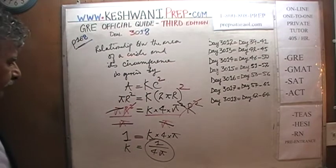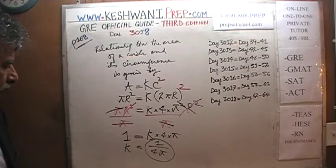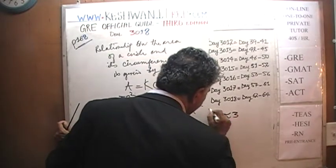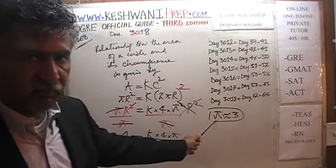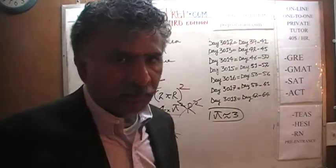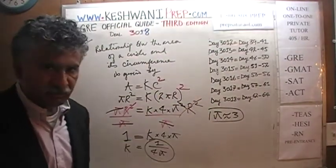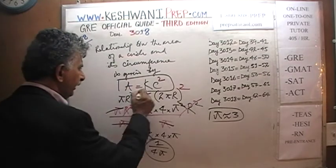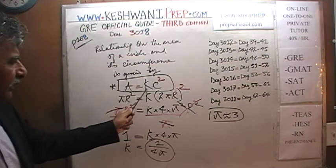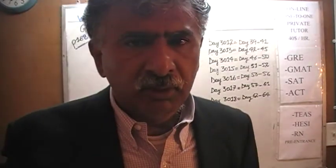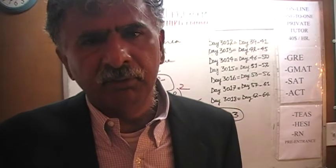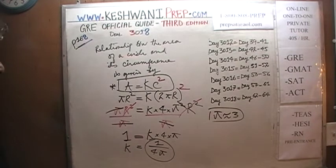Very cool — k equals 1 over 4π. To give an intuition, if we approximate π as 3, then 4 times 3 is 12, so k is approximately 1 twelfth. This tells us that the area of any circle is approximately 1 twelfth of the square of its circumference — not exact, because we're using π ≈ 3. This was problem number 11; now we're going to do 12.